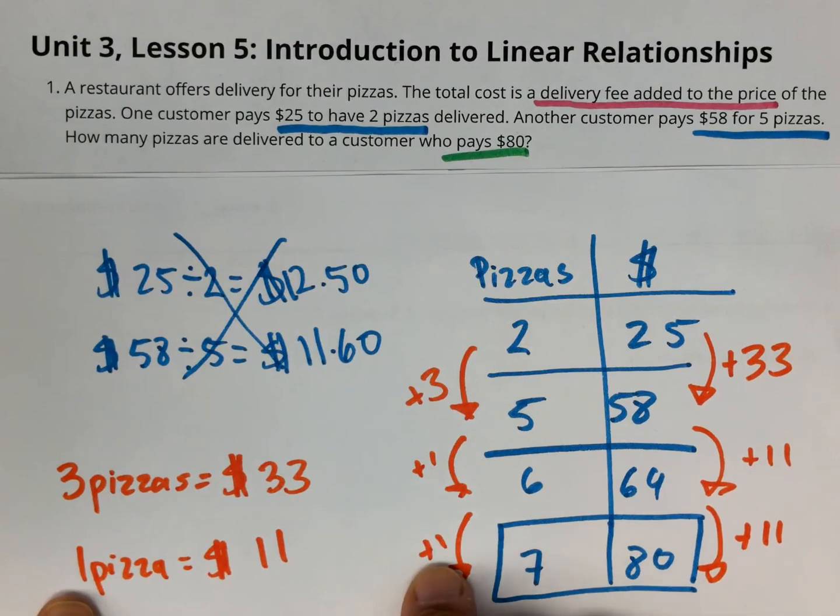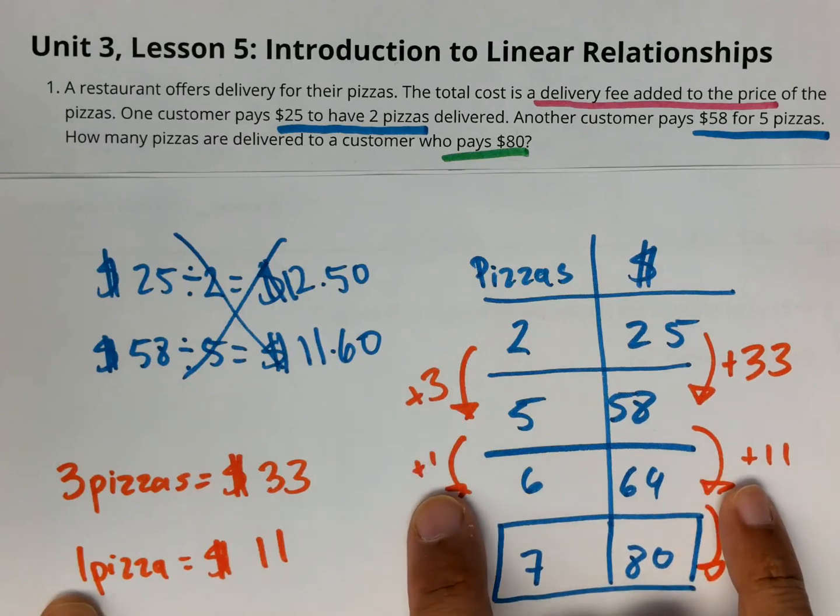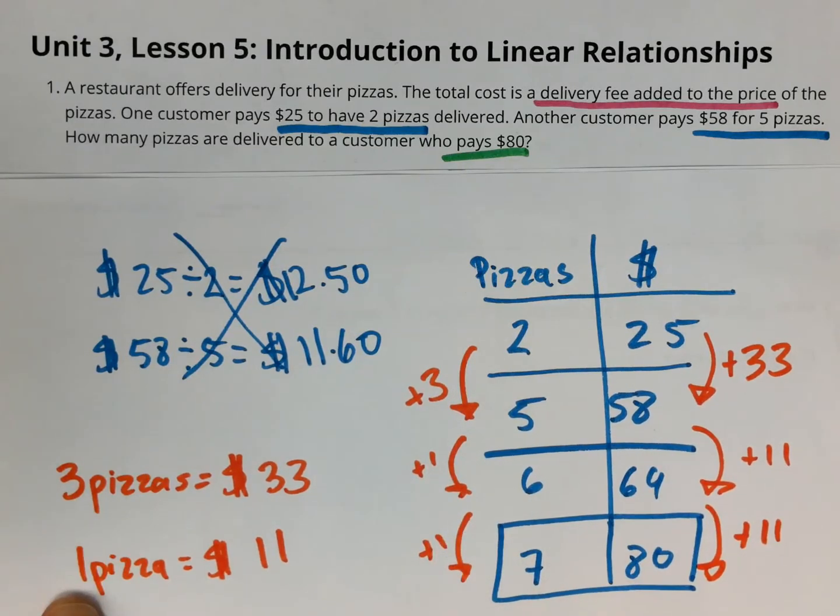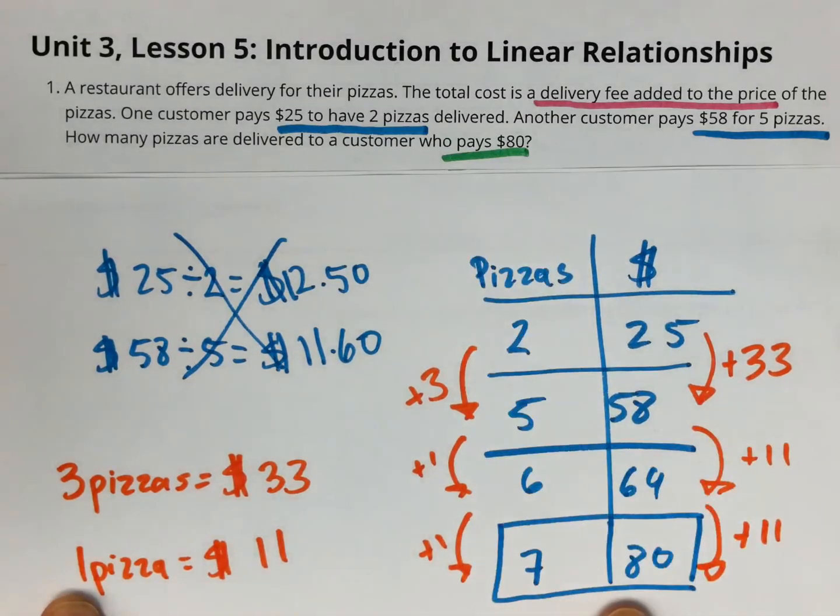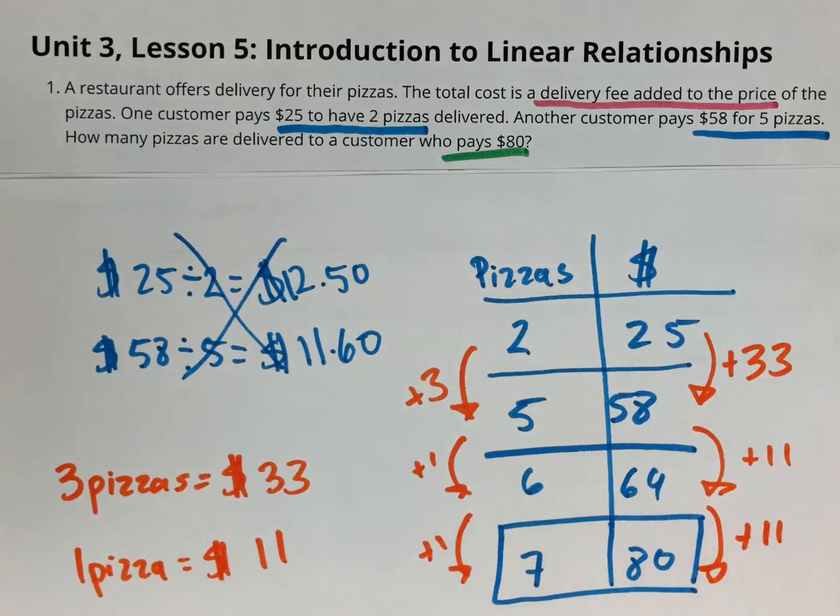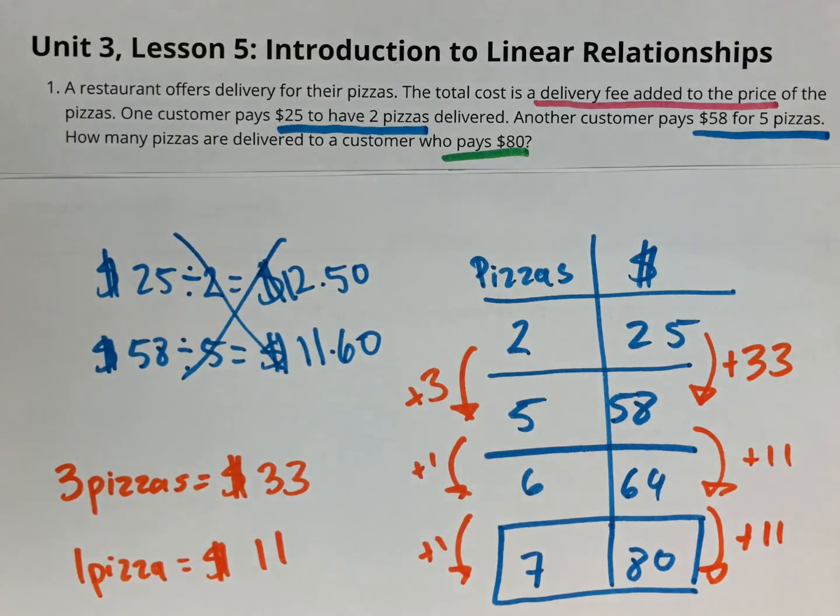These numbers here in orange are not including the delivery fee. Then I can do that to know every time I add one pizza, I add $11 and that can continue the table and keep going. I stopped here at seven pizzas because the question is asking me for $80, which comes out to seven pizzas. All right. Thank you, ladies and gentlemen.